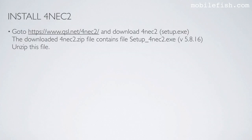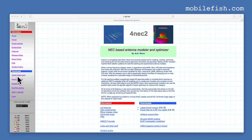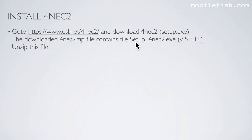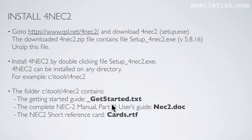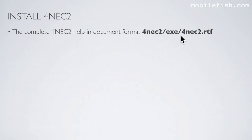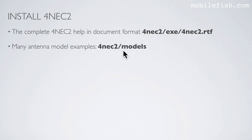First, install the 4NEC2 program. Go to the website and download the file. The downloaded zip file contains an executable. Unzip it, then install 4NEC2 by double-clicking the setup file. 4NEC2 can be installed in any directory. In the installation folder you can find the getting started guide, the complete NEC2 manual Part 3 user's guide, the NEC2 short reference card, the complete 4NEC2 help documentation, and many antenna model examples.